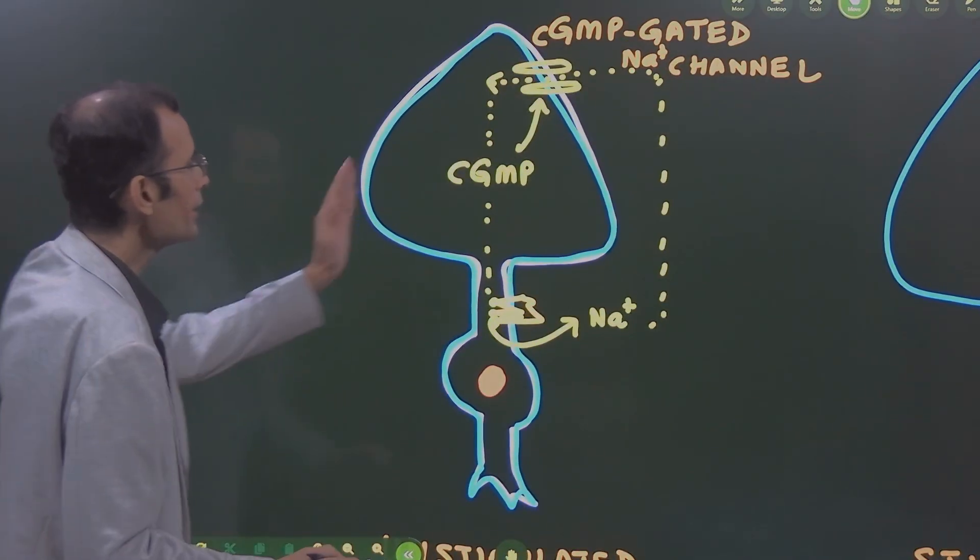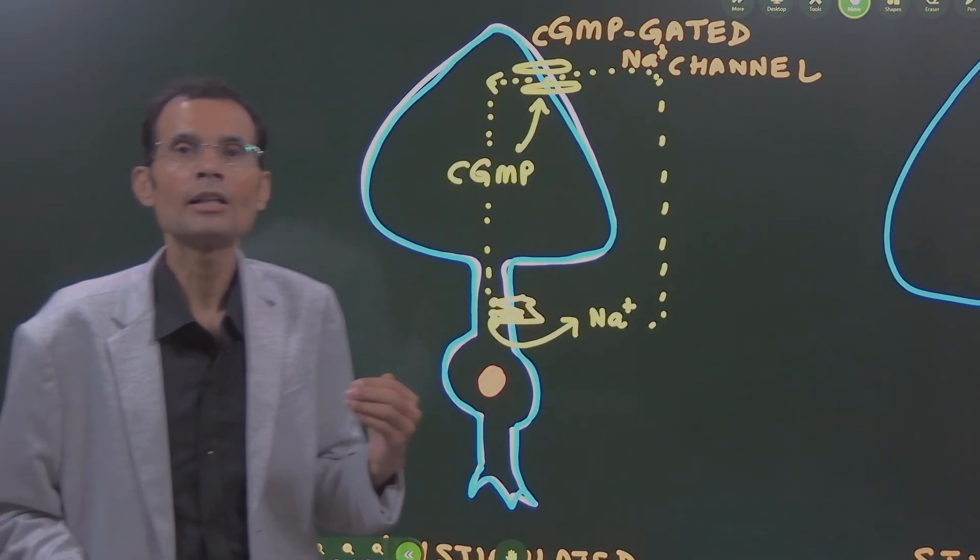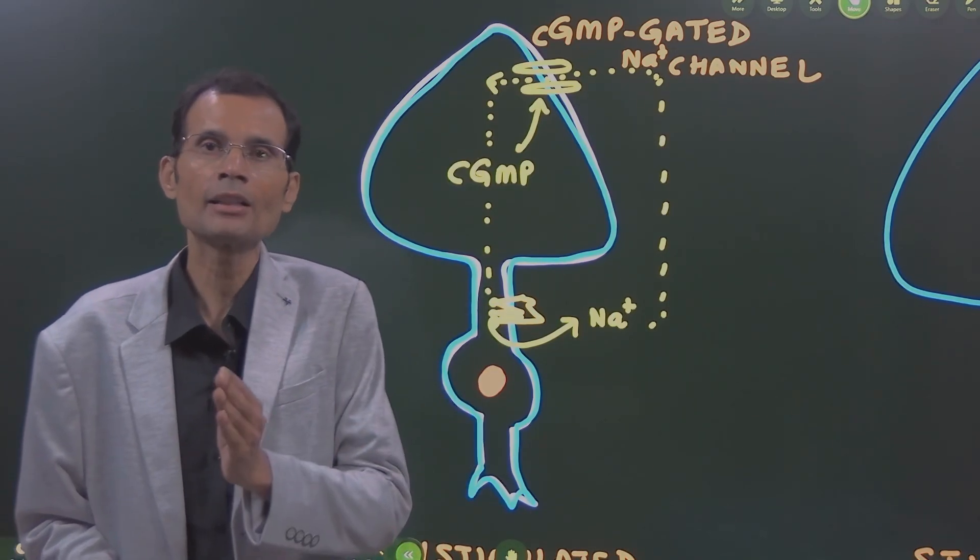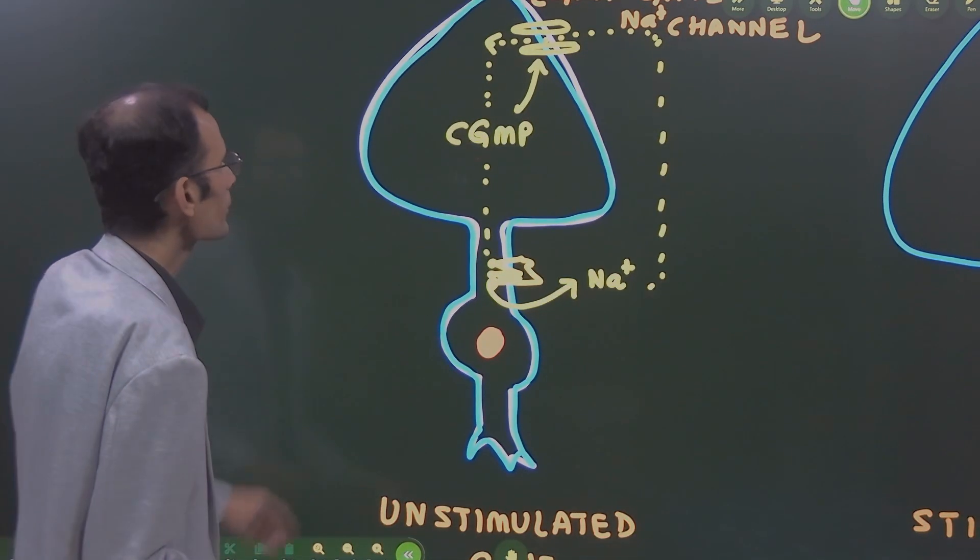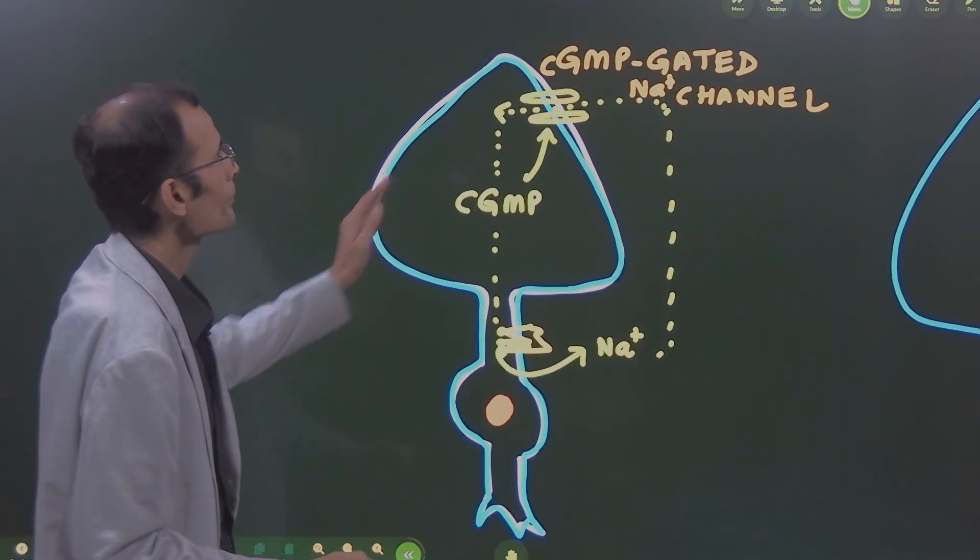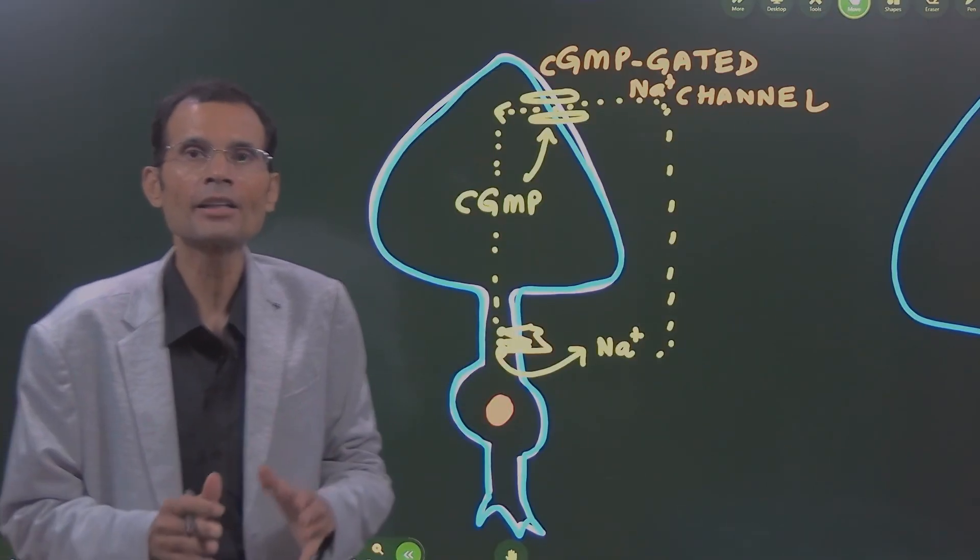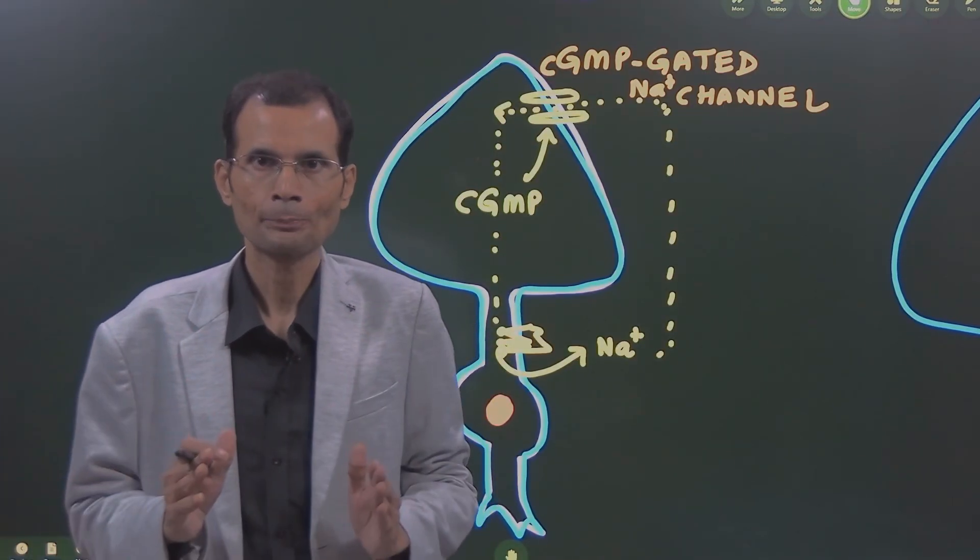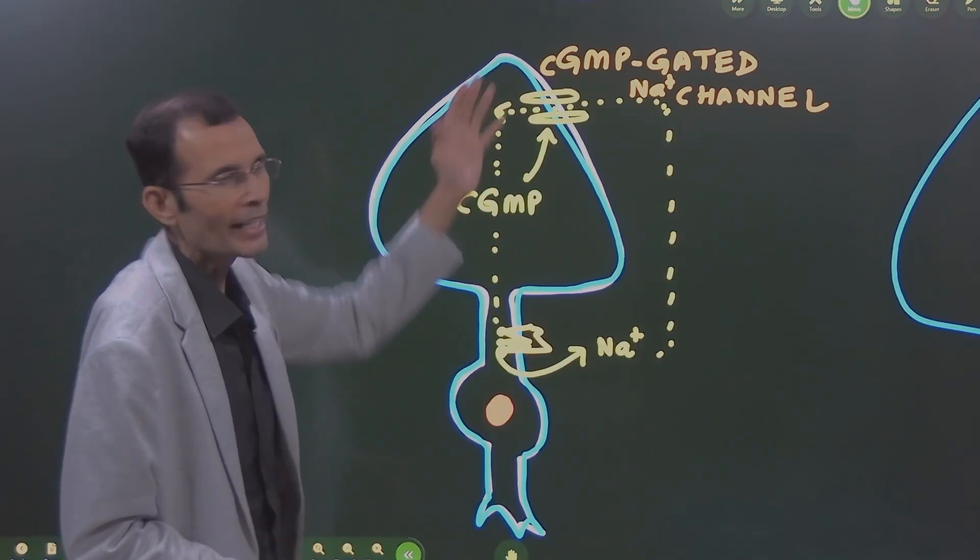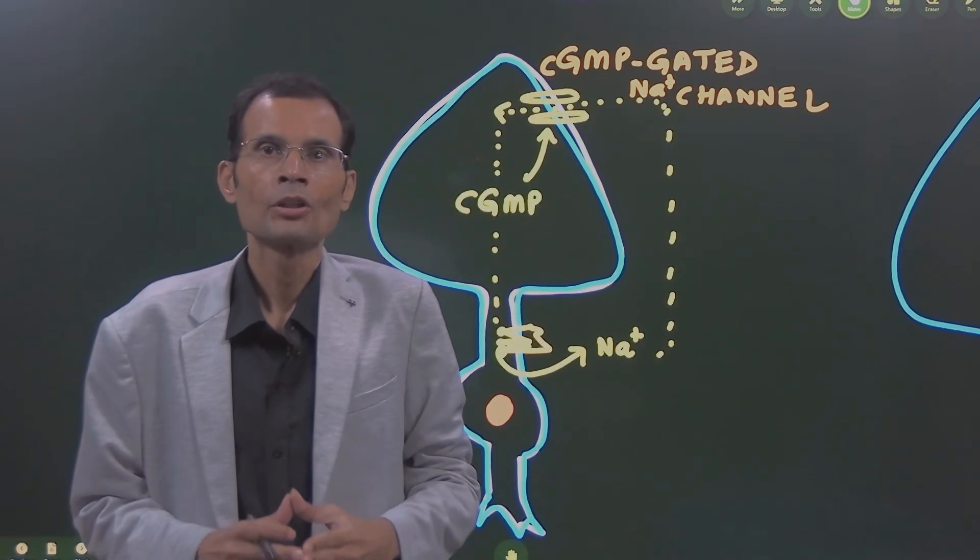Here is an unstimulated cone. When light is not striking a rod or a cone, in the outer segment there is a cyclic GMP gated sodium channel. That is, its gating is by the cyclic GMP.